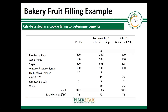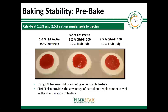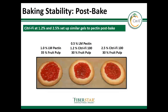I'd like to show a practical example which combines two functionalities of Citrify: gelling and structuring in a cookie fruit filling. We tested Citrify versus an LM-pectin control, a mixture containing both pectin and Citrify, as well as pure Citrify alone. In the case of Citrify, the fruit pulp content was lowered. Calcium is required for the LM-pectin but not for Citrify. The fruit preparation with Citrify at 1.2% and 2.5% set up gels like the pectin control. After baking, the fruit preps with Citrify behaved like the pectin control, and despite the reduction in fruit pulp, the Citrify-containing cookies looked similar to the pectin control.